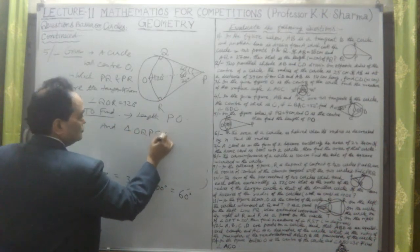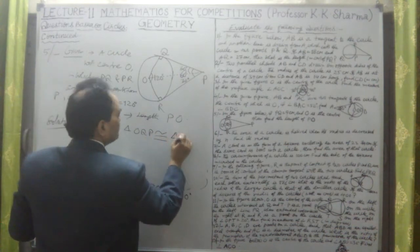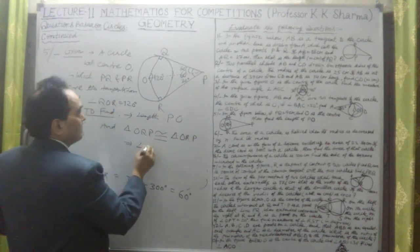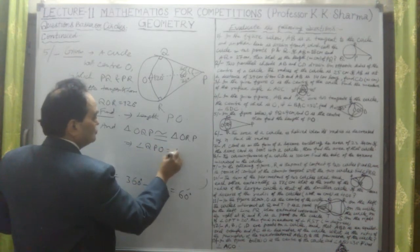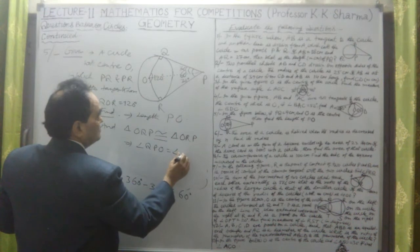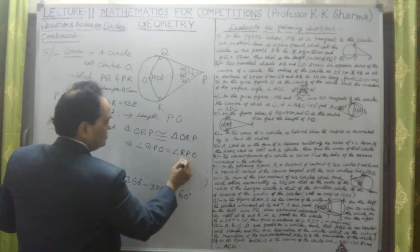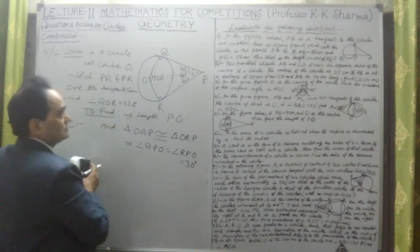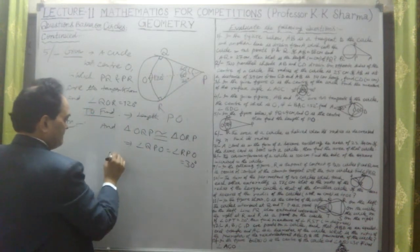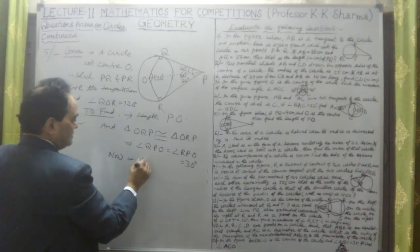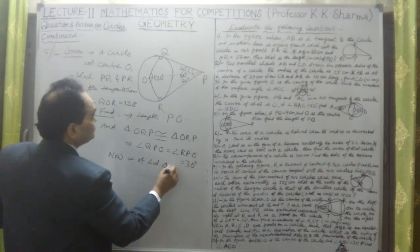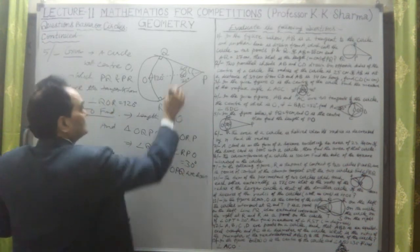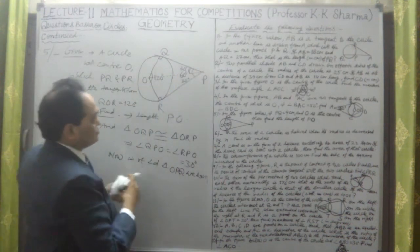In right triangle OQP, the angle at Q is 90° and angle QPO is 30°. Using trigonometry with the 30-degree angle, we apply cos 30° equals the base PQ divided by hypotenuse PO.